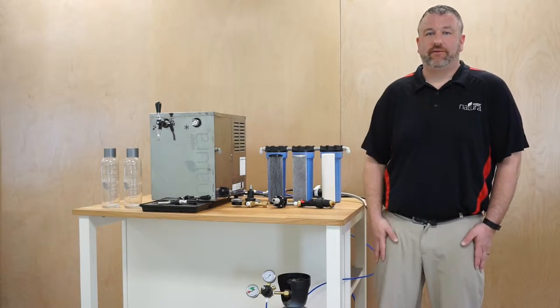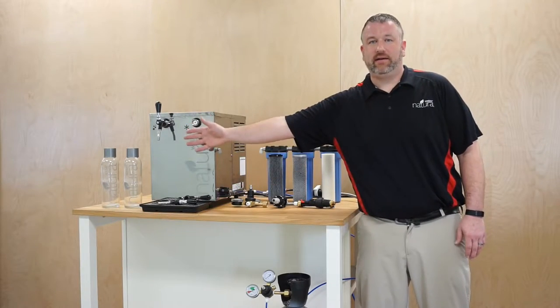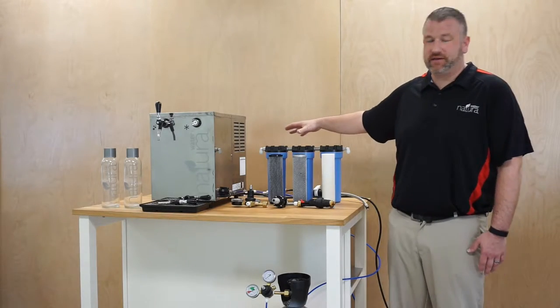When you arrive on site, you're going to have two boxes. The first box will have your machine, drip tray, and taps. The second box will be your filtration installation kit.